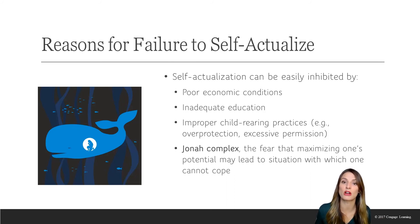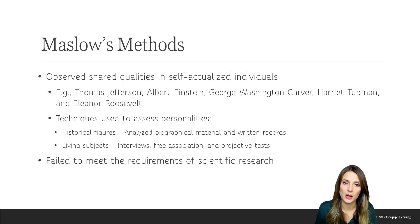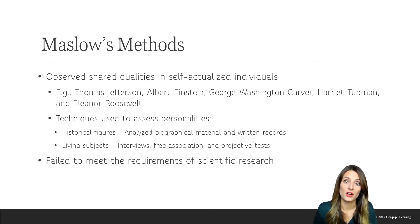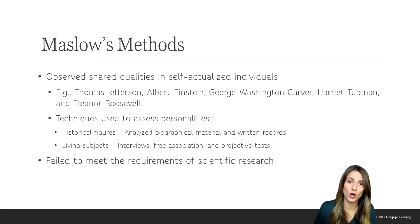So how did Maslow come up with this theory? He did two things. He analyzed the biographies and written records from people he admired, including Thomas Jefferson, George Washington Carver, and Eleanor Roosevelt. He also collected information from people who were alive — he gave them projective tests, interviewed them, and asked about their life experiences, things that drive them, goals, and aspirations. He also used free association, giving them a word and asking them to respond with the first thing that came to mind.